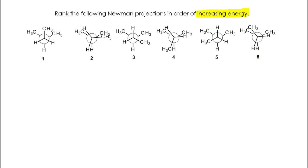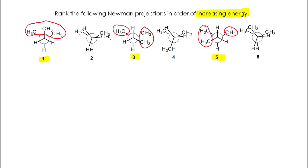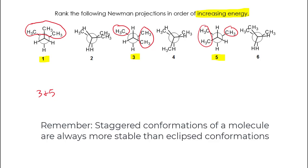Let's start by focusing our attention on the staggered conformations — we're going to be looking at one, three, and five. Clearly the worst is going to be number one, where all of the methyl groups are gauche to each other. However, when we look at three and five, we can see that they each have two methyl groups that are gauche as well as one methyl group that is anti to one of the other methyl groups. So three and five are going to be the most stable or the lowest in energy, and then number one is the next lowest in energy.